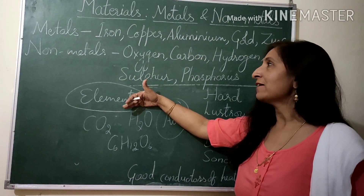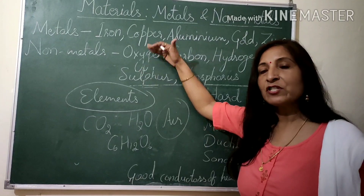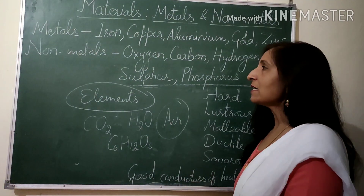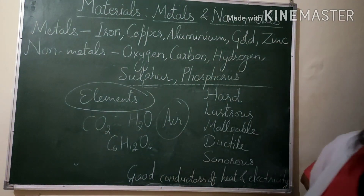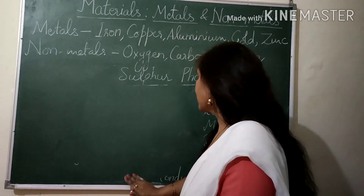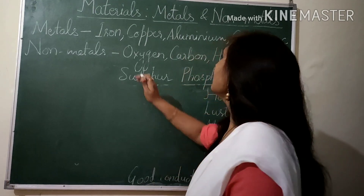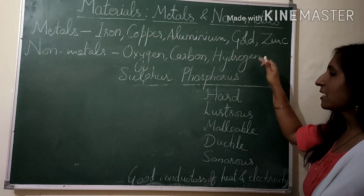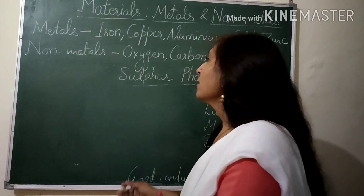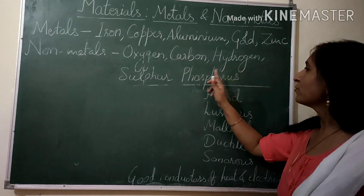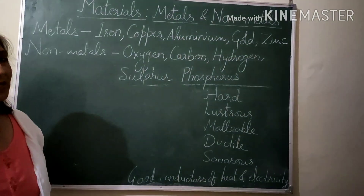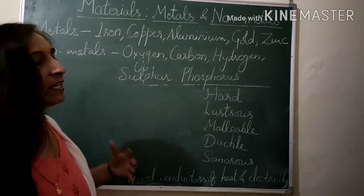These elements are categorized as metals and non-metals, which are different from each other. There are also some metalloids, about which you will study later on. Examples of metals include iron, copper, aluminium, gold, zinc, calcium, and magnesium. Examples of non-metals include oxygen, carbon, hydrogen, sulfur, phosphorus, iodine, chlorine, and fluorine. Let us now understand how they are different from each other.